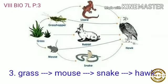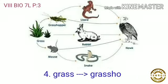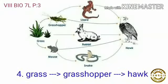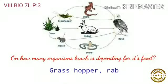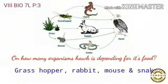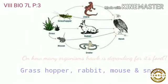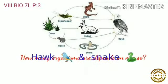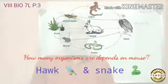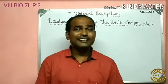Grass → mouse → snake → hawk is another path, and grass → grasshopper → hawk is one more path. How many organisms is hawk depending on for its food? Hawk depends on grasshopper, rabbit, mouse, and snake. And how many organisms are depending upon the mouse? Hawk and snake are both depending upon the mouse.